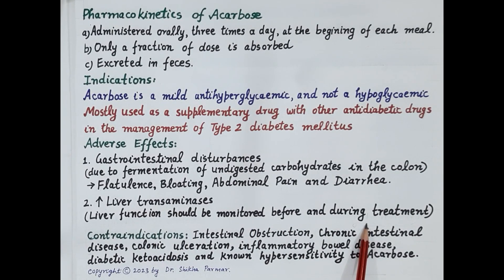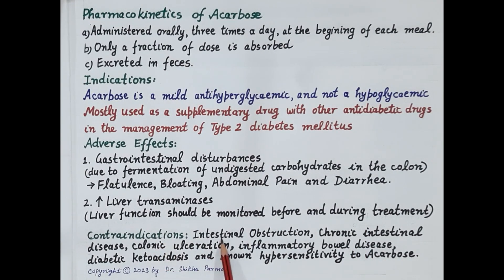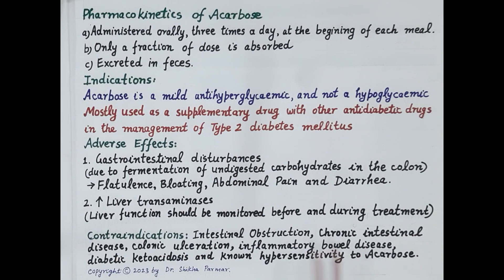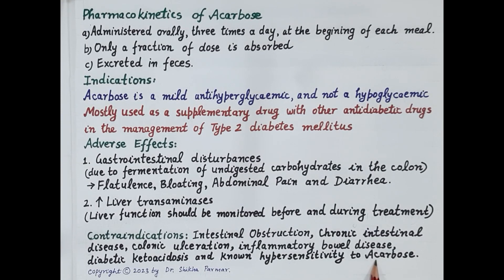Since the site of action of acarbose is the intestine, contraindications include intestinal obstruction, chronic intestinal disease, chronic colonic ulceration, and inflammatory bowel disease. Use of acarbose is also contraindicated in diabetic ketoacidosis and in cases of known hypersensitivity to acarbose.